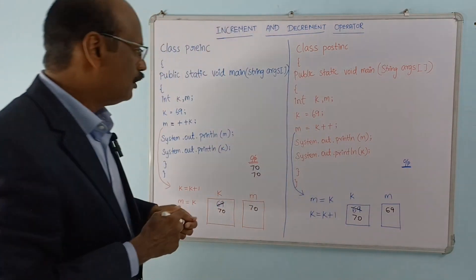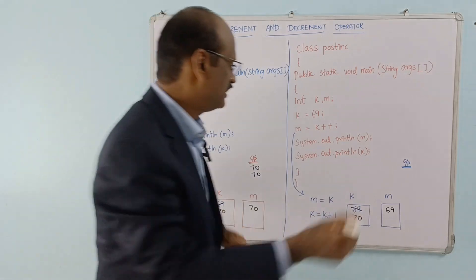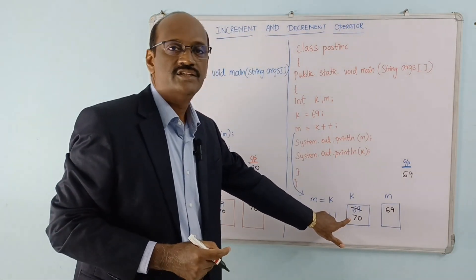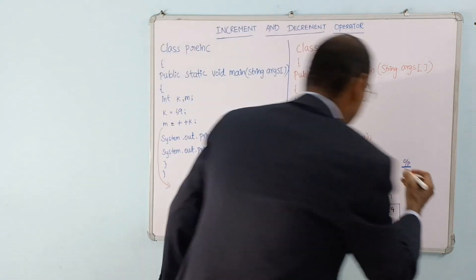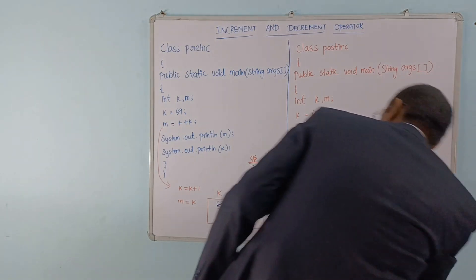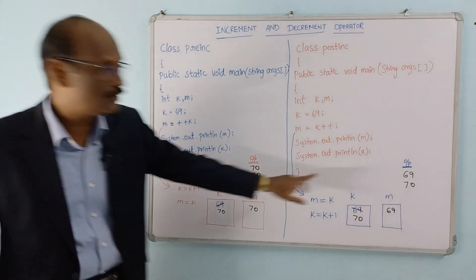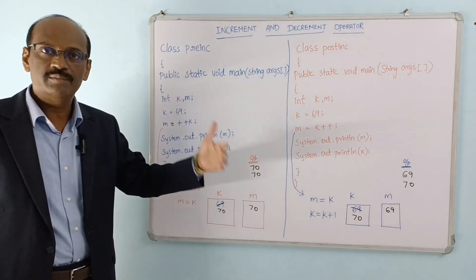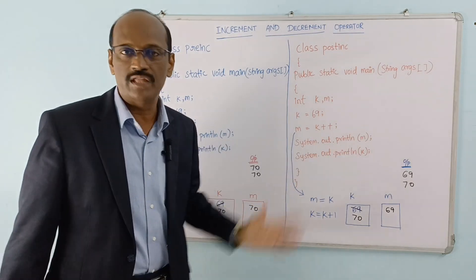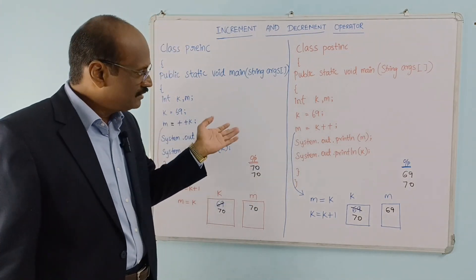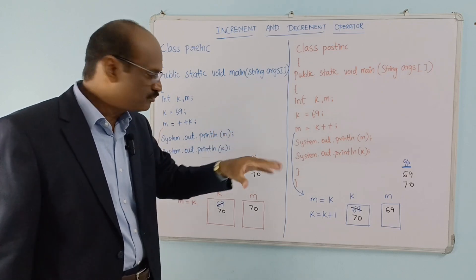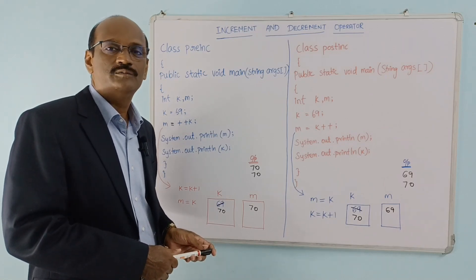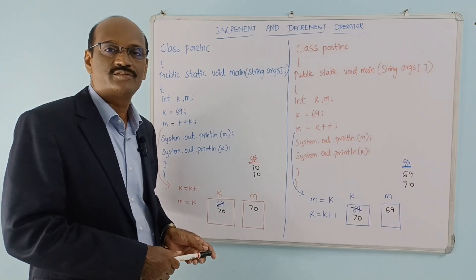If you look at the output: m value is 69, and k value is 70. Now if you compare the two values, there is a difference. Even though both post-increment and pre-increment increment the variable by 1, the timing of assignment differs. That's all for now. For more videos, please subscribe to Logic Bits channel. Thank you.